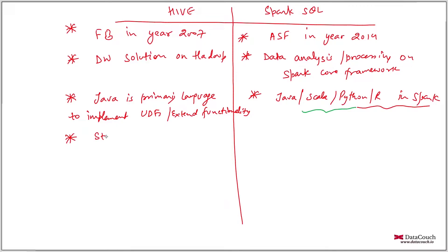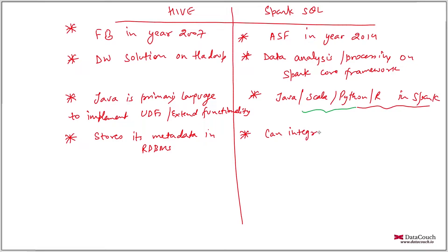Hive stores its metadata in a metastore in an RDBMS relational database, so when you create a table, the metadata goes into the RDBMS. Spark SQL can actually integrate with the metadata in Hive.